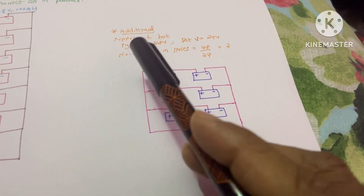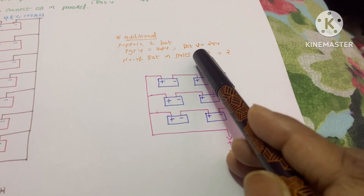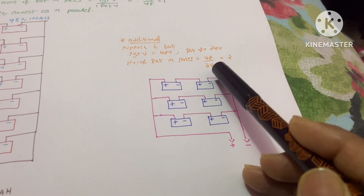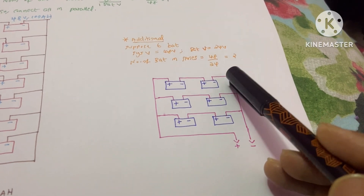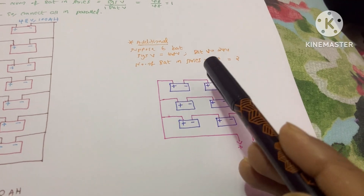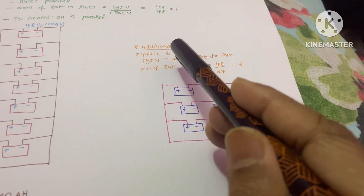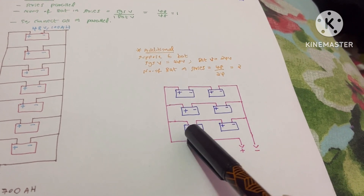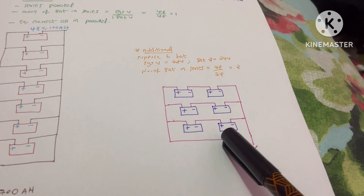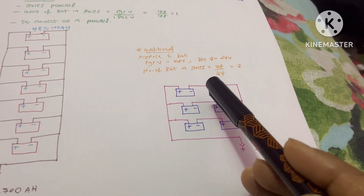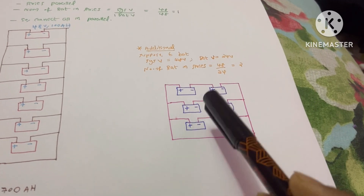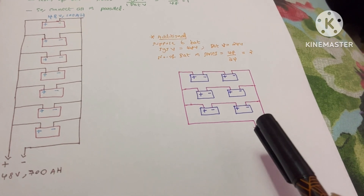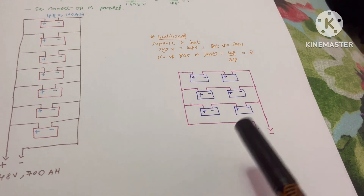As an additional example: suppose you have six batteries and your system voltage is 48V but each battery is 24V. Number in series = 48 / 24 = 2. So take two batteries and connect in series, repeat for the remaining four batteries to form three series banks of two, then connect all three banks in parallel. That is the series-parallel connection method.